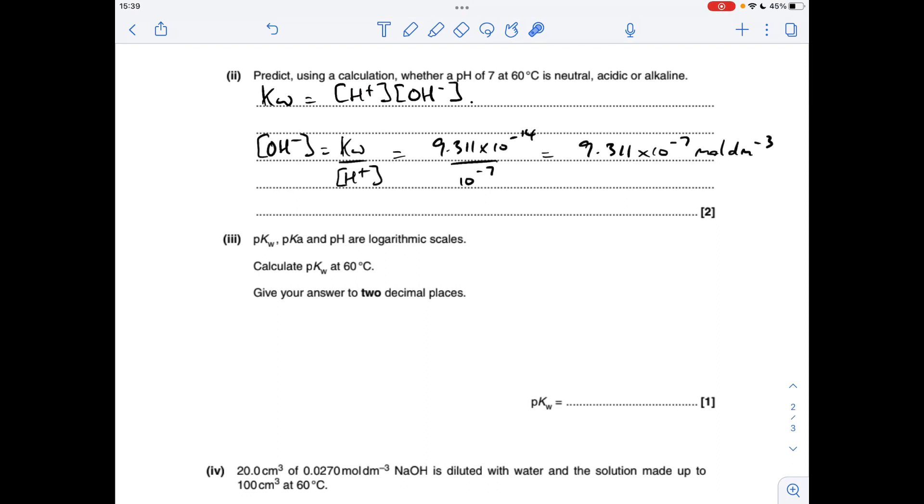So I'll just explain what I've got so far. Obviously Kw rearranges for OH minus to this. So if we put the numbers in, obviously the H plus concentration is 10 to the minus pH. That's where that 10 to the minus 7 comes from. So the OH minus concentration is that. The H plus concentration is 1 times 10 to the minus 7. So you can see that the hydroxide ion concentration is higher, and so this solution must be alkaline.